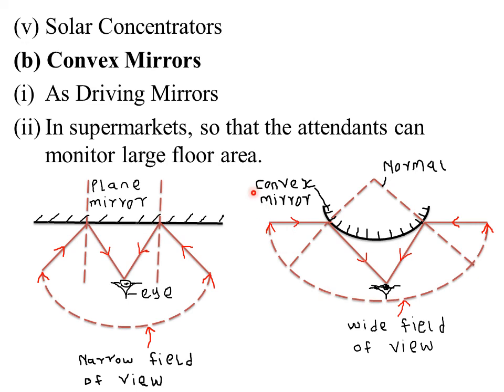Another application is in solar concentrators. The heat and light energy from the sun can be brought to focus by a concave mirror, since it is a converging mirror that converges parallel rays from infinity to the principal focus. This fact is used in solar cookers, where a small oven is placed at the focal point of a large mirror to cook food or boil water.